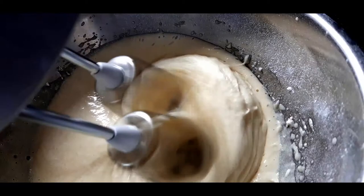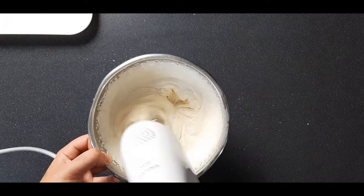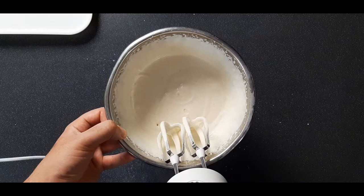Now using an electric whisk set to low to start with, so the icing sugar doesn't fly out everywhere, just get those ingredients incorporated. Then you can turn it up to high and whisk this until it comes to what we call the ribbon stage. That's where you can leave a trail like this before it sinks back in.